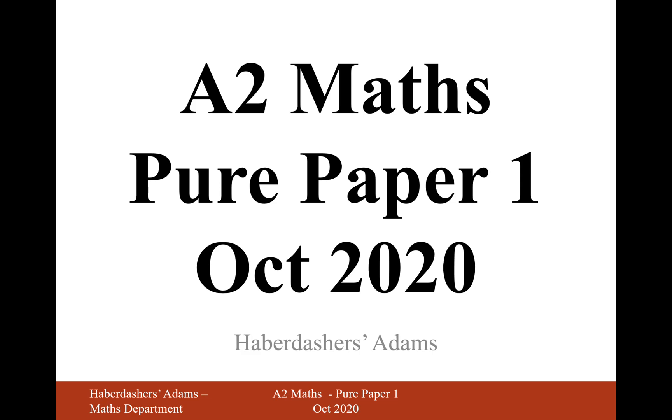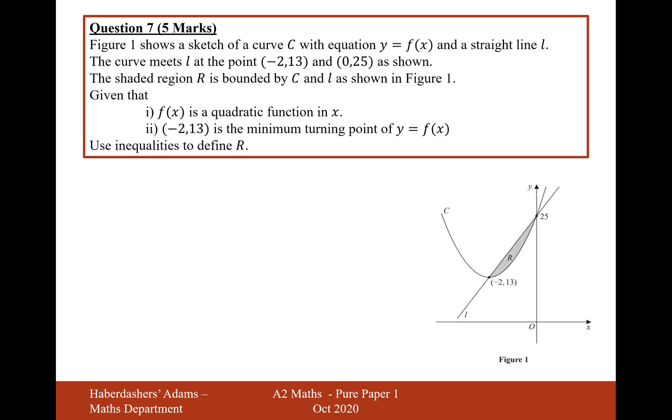Hello there, we're looking at paper 1 from the October 2020 series, here we're looking at question 7. Figure 1 shows a sketch of curve C with equation y equals f of x and a straight line L. The curve L meets the points of minus 2, 13 and 0, 25. The shaded region R is bounded by C and L as shown in figure 1. Given that f of x is a quadratic function in x and minus 2, 13 is the minimum point of f of x, use inequalities to define R.